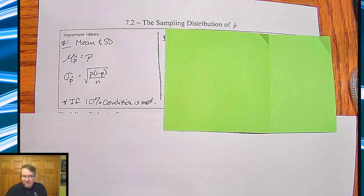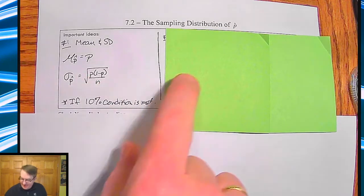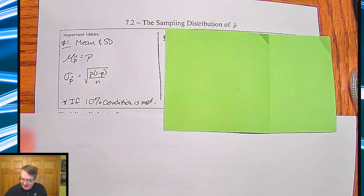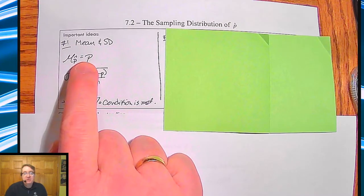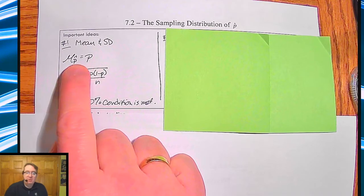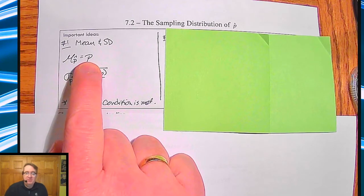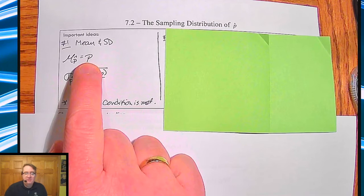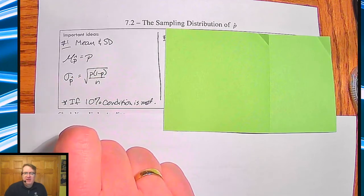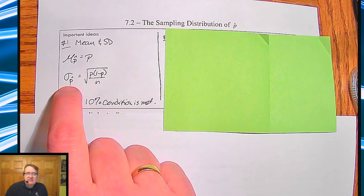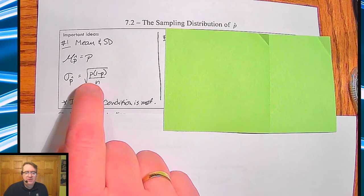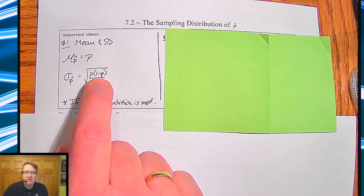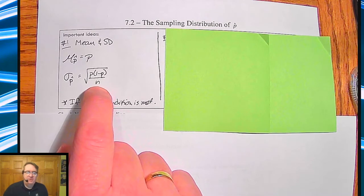Anyway, so let's talk through there's three points today. The first one is the mean and standard deviation of the distribution of p hat. The mean is just going to be the same as what proportion of the population is. Remember p hat is your sample, p is your population. This standard deviation, like we talked about at the end of the experience part, simplifies out to be the square root of p times one minus p all over n.